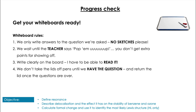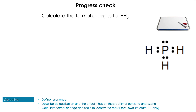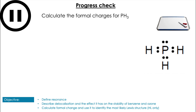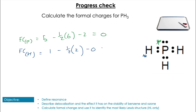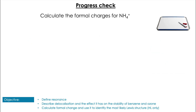First question: calculate the formal charges for the atoms in PH3. Pause the video to have a go. Phosphorus is in group 5 so it has five electrons in the outer shell and has three single bonds, so 5 minus half of 6 minus 2 equals zero. Hydrogen is 1 minus half of 2 minus 0 which also equals zero. So both atoms in PH3 have a formal charge of zero.